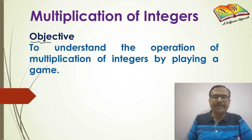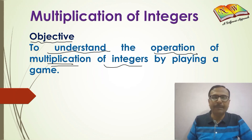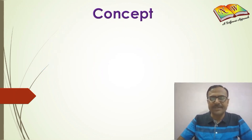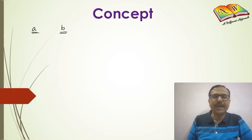The objective of this activity is to understand the operation of multiplication of integers by playing a game. So let's understand the concept first. If the first integer is A and the second integer is B, let's assume the following cases.